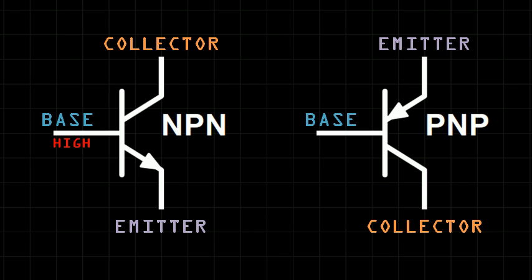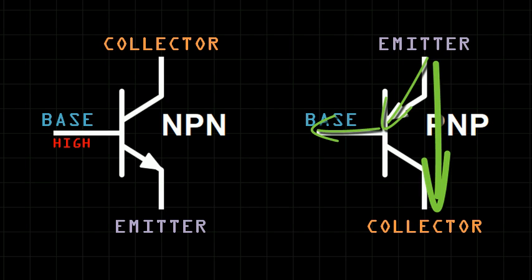For PNP transistors, a small current passing from the emitter to the base will allow a larger current to flow from the emitter to the collector. In contrast to the NPN transistor, this is done by applying a low voltage to the base relative to the emitter.